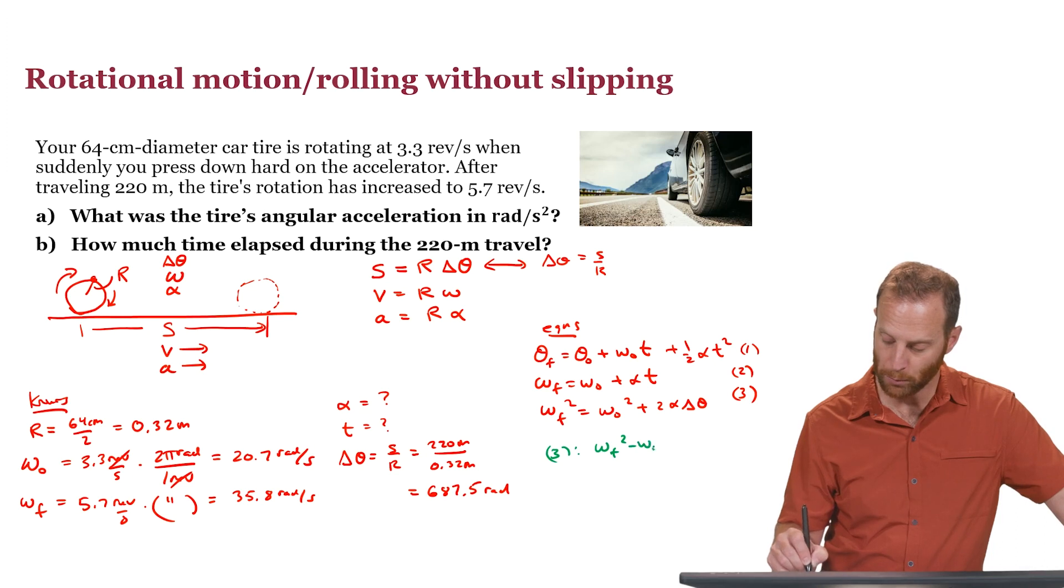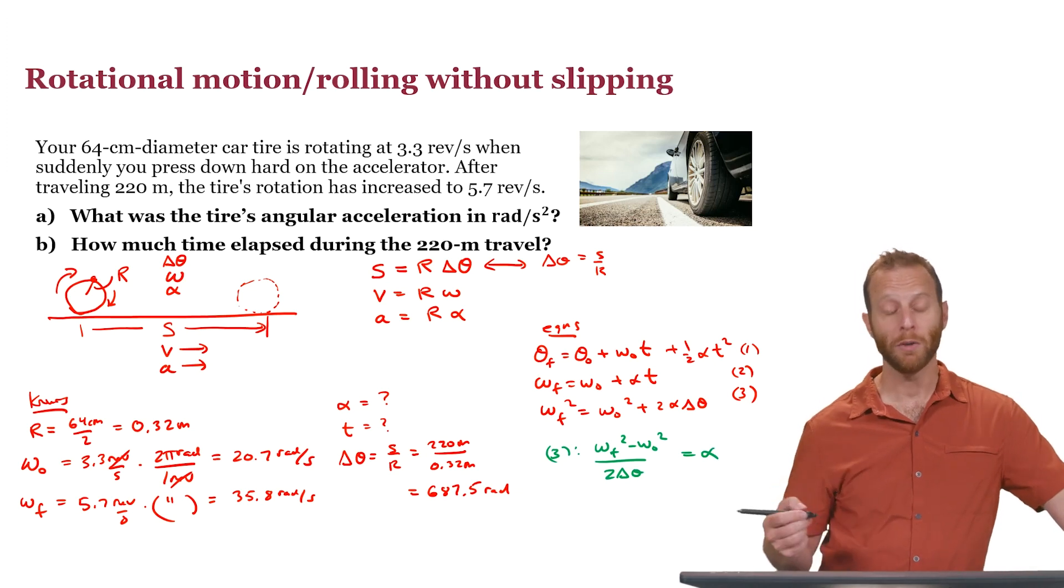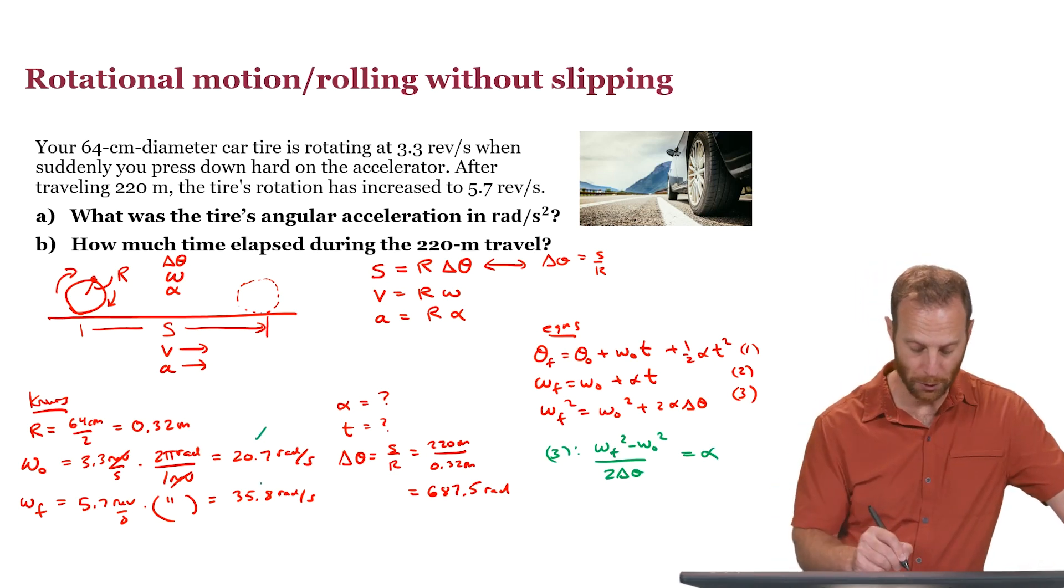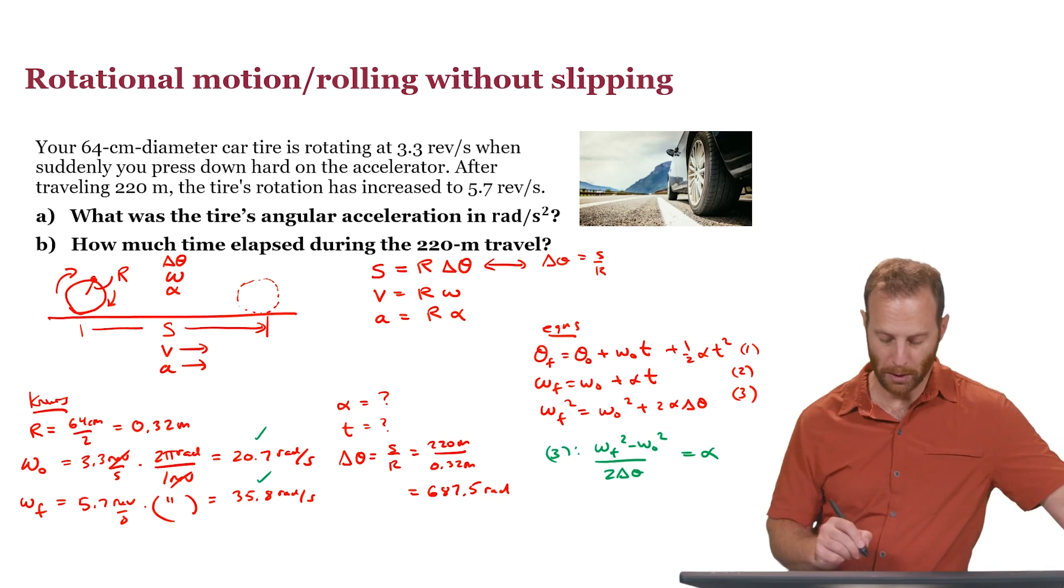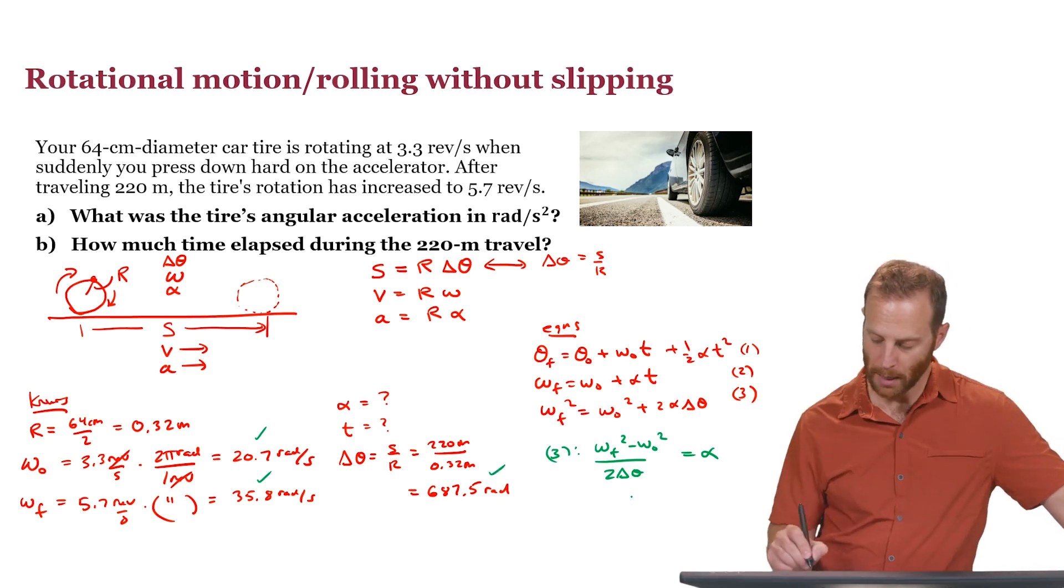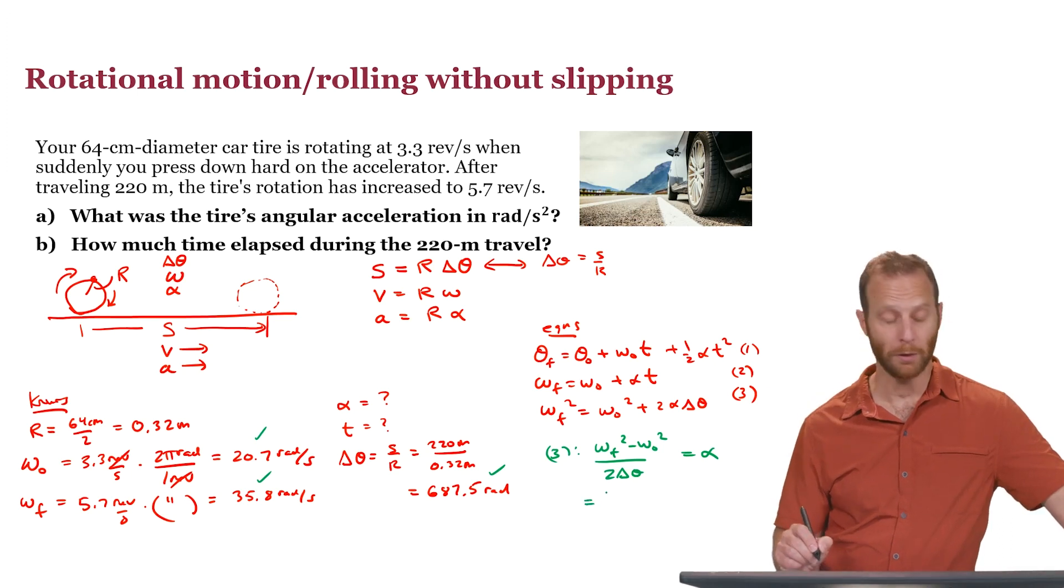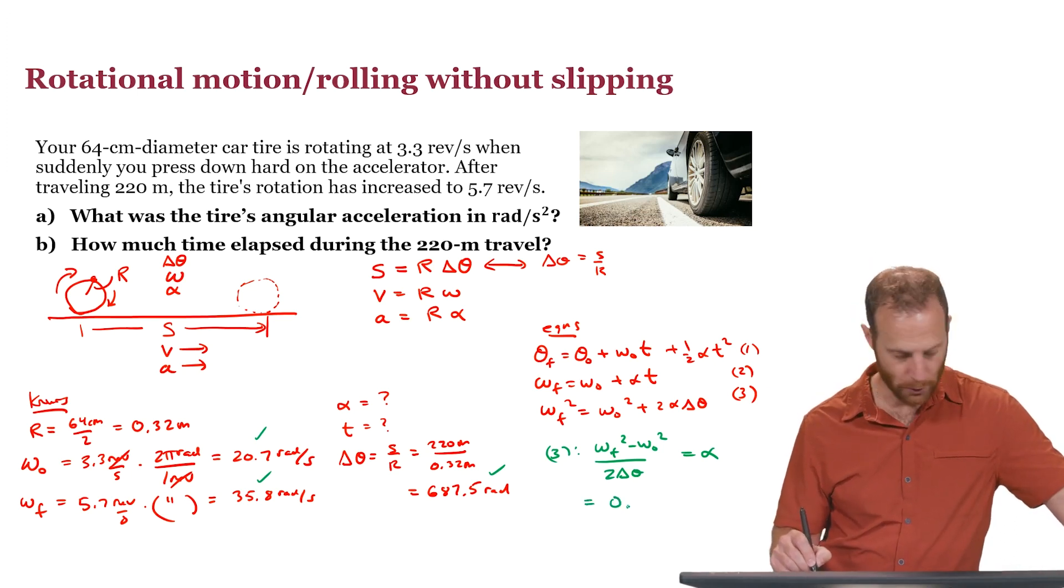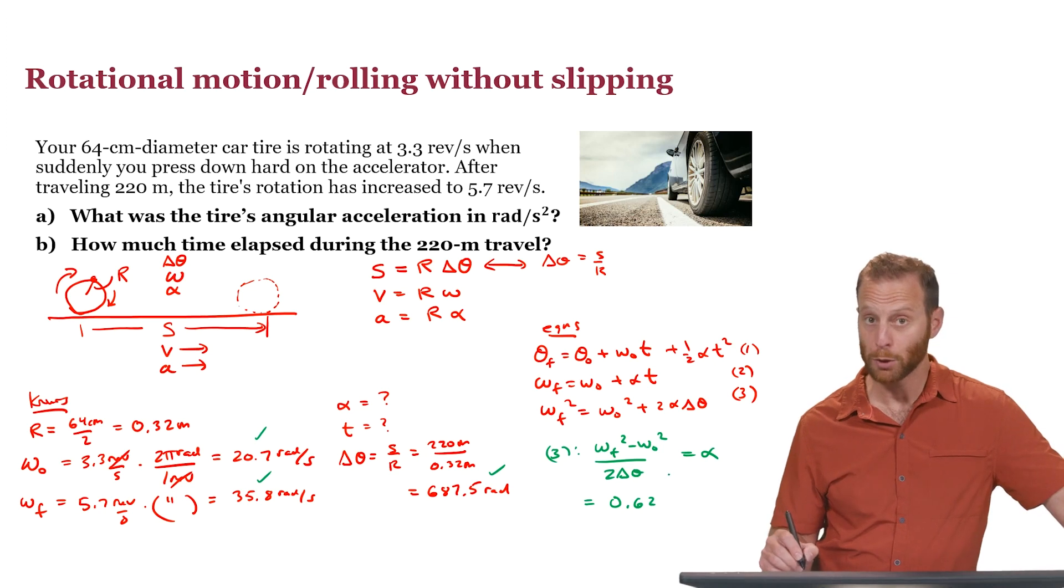If we simply rearrange, do some algebra, subtract omega naught, and divide by 2 delta theta, that will give us alpha. We have now all the numbers that we need: the initial and final angular speed and the angular displacement. When we plug in those numbers, we should get about 0.62, and the units will be radians per second squared for alpha.